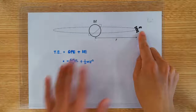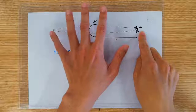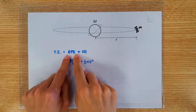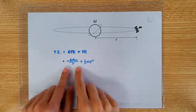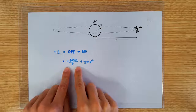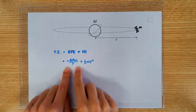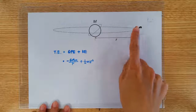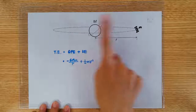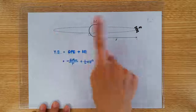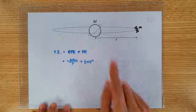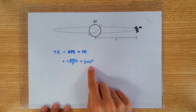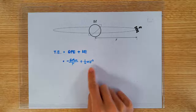Since this mass is sitting in the gravitational field of the Earth, there must be GPE, and the GPE can be written as negative GMm over R. And of course, the satellite is doing circular motion, so it is moving, which means it has KE. And the KE can be written as half mv squared.